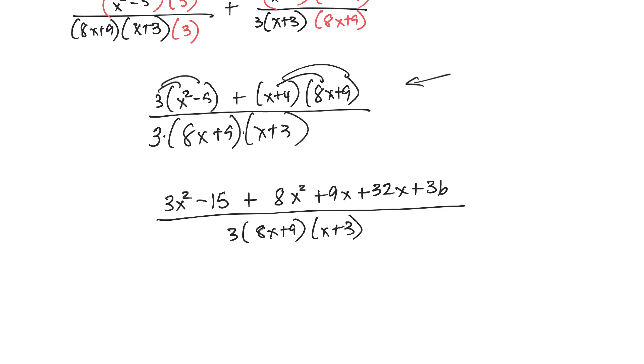Okay, now on the top, I can collect like terms. These two are alike, so that would be 11x squared. These two are alike, so that would be 41x, and then the 15 and the 36, and that would be 21, plus 21, over the lowest common denominator, 8x plus 9, x plus 3.